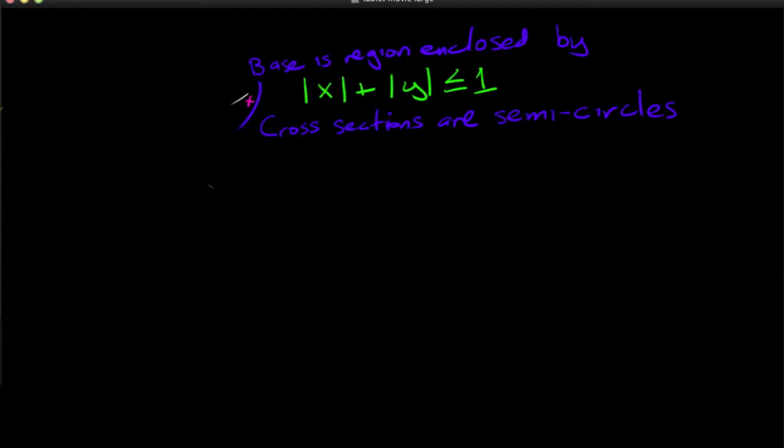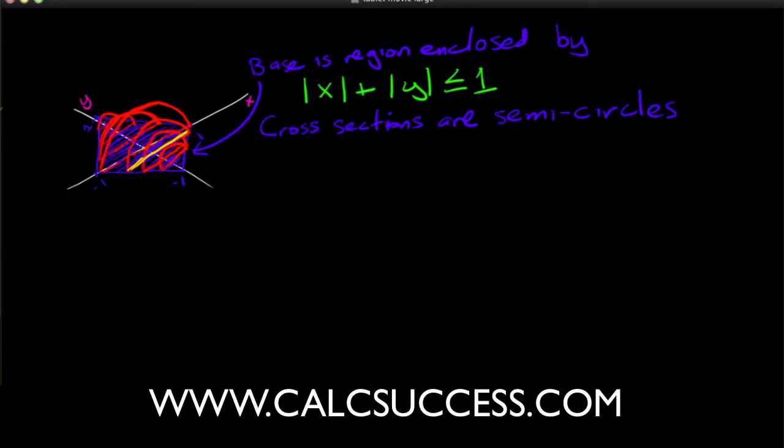And you get something like... and so then we need to find the area of one of these semi-circles. So let me just kind of choose this one as my semi-circle.